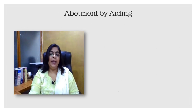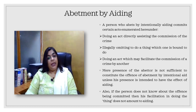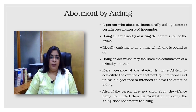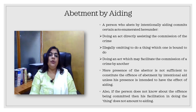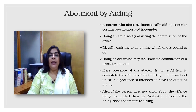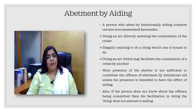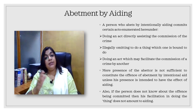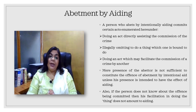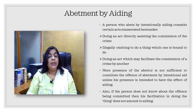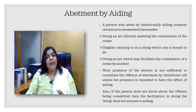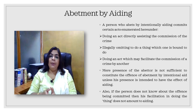Next is abatement by aiding. If by intention anyone is helping another person in any form, it comes under abatement by aiding. For example, A wants to kill C and B helps A by providing him either a poison or a weapon to kill C — that comes under abatement by aiding, because B is only providing the means to kill C and not actually committing the murder. This is called abatement by aiding.